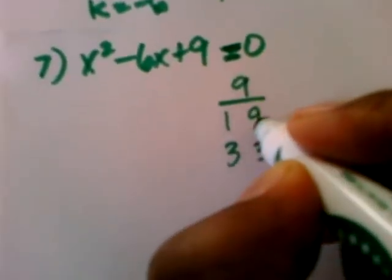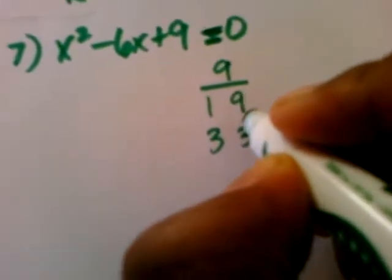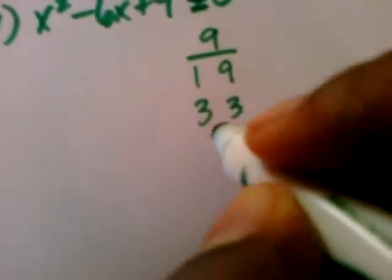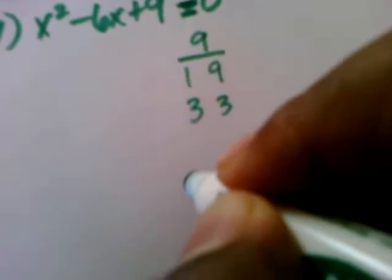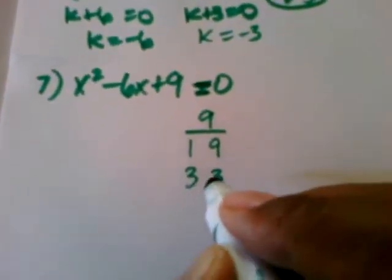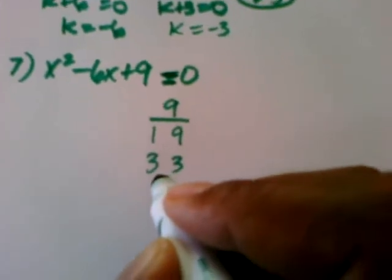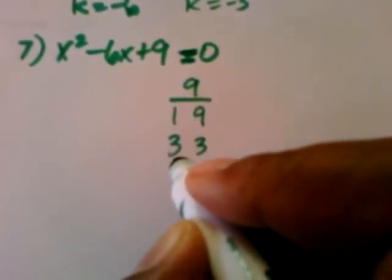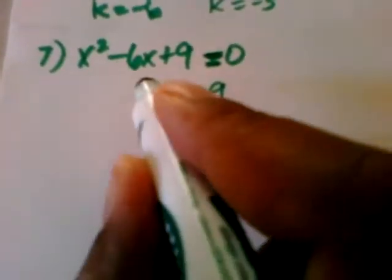If I subtract these, I'll either get an 8 or a negative 8. If I add them, I'll either get a 10 or a negative 10. And I don't want either one of those. If I add these, I'll either get a 6. If I subtract them, I get 0.